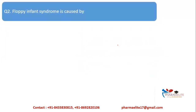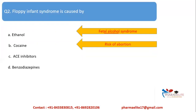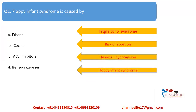MCQ: Floppy infant syndrome is caused by — ethanol, cocaine, ACE inhibitors, or benzodiazepines? Ethanol causes fetal alcohol syndrome; cocaine causes risk of abortion; ACE inhibitors cause hypoxia and hypotension. Benzodiazepines cause floppy infant syndrome — which is hypotonia, meaning weaker muscle tone. This is the adverse effect caused by benzodiazepines.